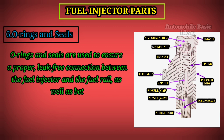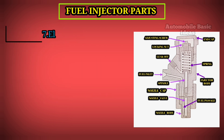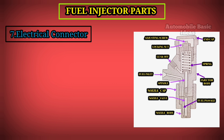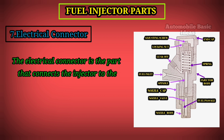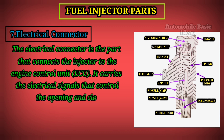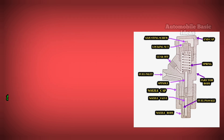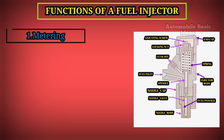6. O-Rings and Seals. O-rings and seals are used to ensure a proper leak-free connection between the fuel injector and the fuel rail, as well as between the injector and the engine's intake or combustion chamber. 7. Electrical Connector. The electrical connector is the part that connects the injector to the engine control unit (ECU). It carries the electrical signals that control the opening and closing of the injector.